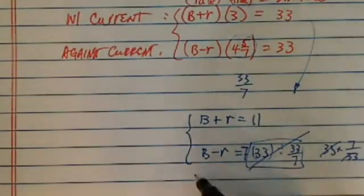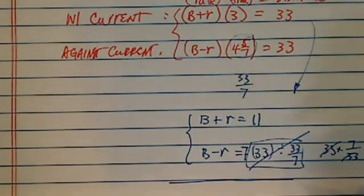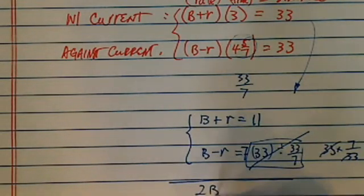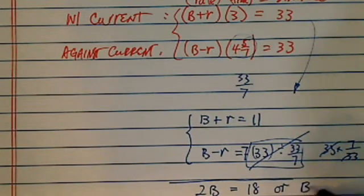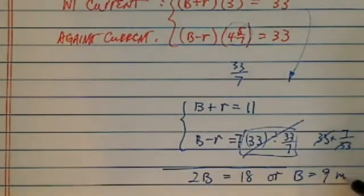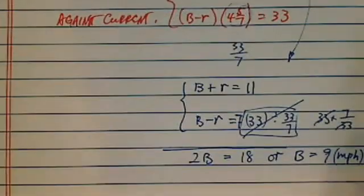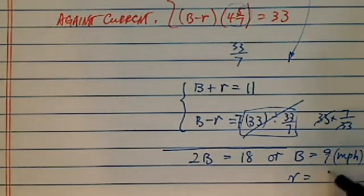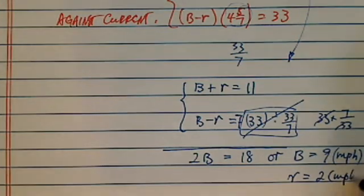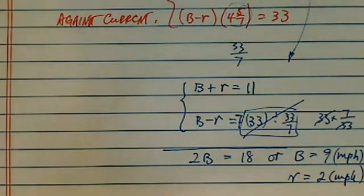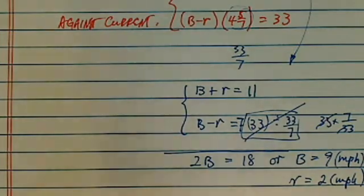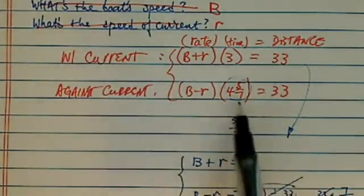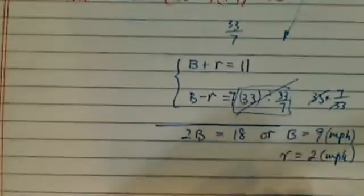In this simple system of equations, if you add equation one and equation two, you get 2b equals 18, so the boat speed is 9 miles per hour. And since b plus r equals 11, r equals 2 miles per hour. That shows the power of the process — you assume you know what the answer is, write the equations out, and simply solve to get the answer.